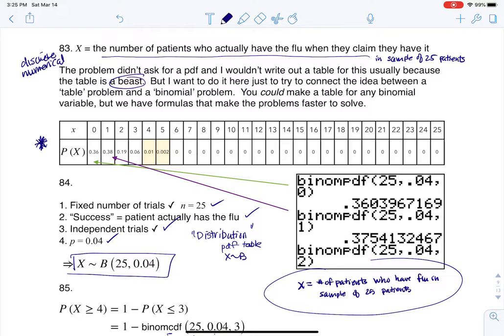But at least for Chapter 4, those are our two options for the distribution question: either make me a table or tell me it's binomial. All right, thanks so much everyone. Bye!